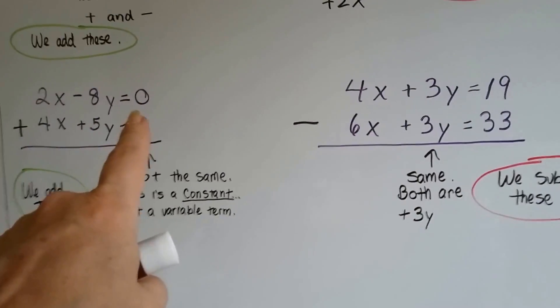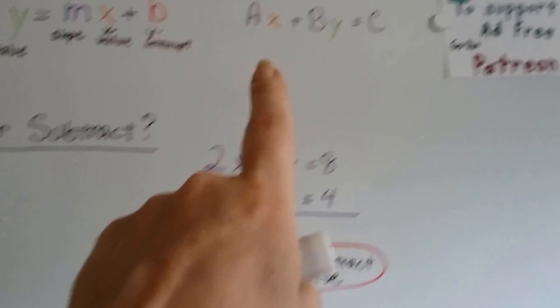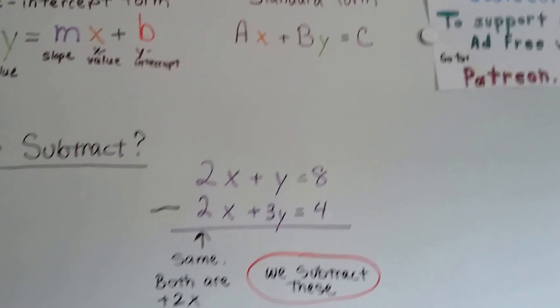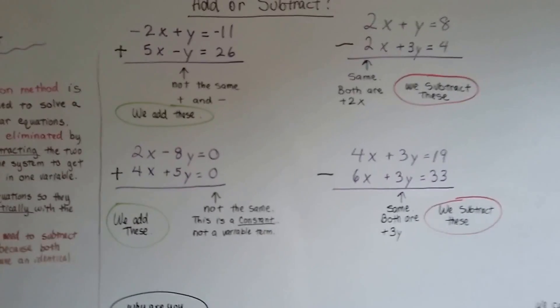It can't be a constant. It's got to be a variable term. It's got to be in one of these spots when it's in standard form. So that's how you know whether to add or subtract when you're doing elimination.